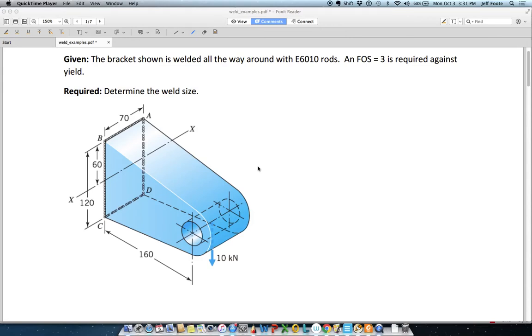The first welding problem we have here is a static yield problem with a given filler rod, a given factor of safety, a given load, and the weld geometry is largely determined. The only thing left to determine is the height, H, of the weld.